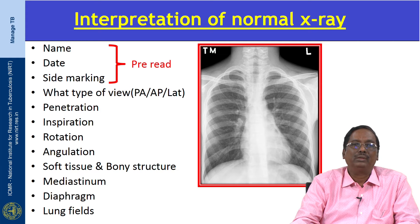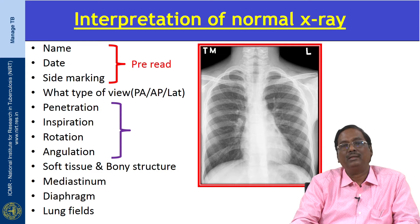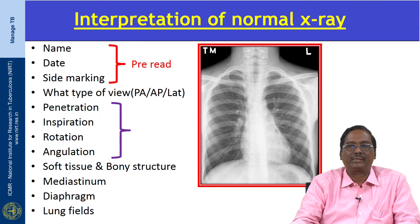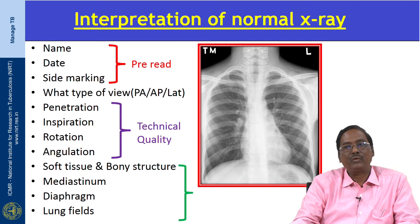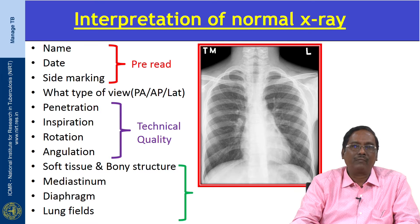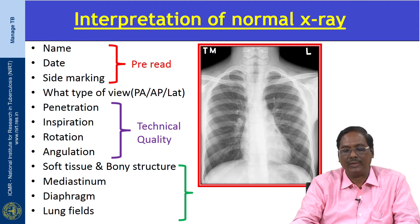Next, we have to check the type of X-ray — whether it is a PA or lateral view. Then we have to check the quality control of the X-ray: that is penetration, inspiration, rotation, and angulation. Next, we have to start interpreting the findings of the X-ray, such as soft tissue, bone structures, mediastinum, diaphragm, and lung fields.